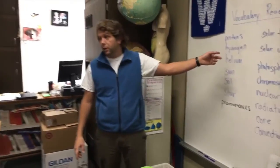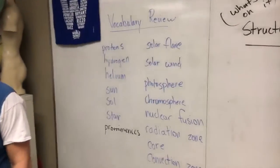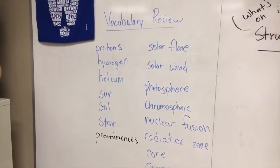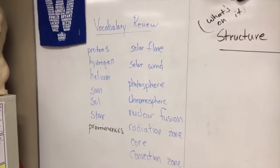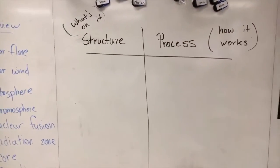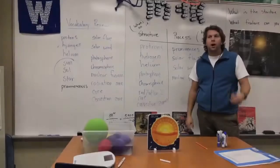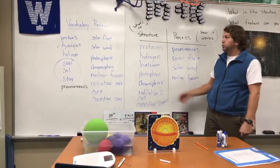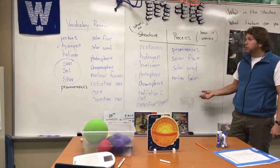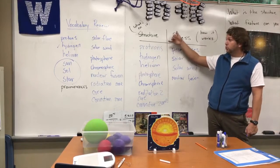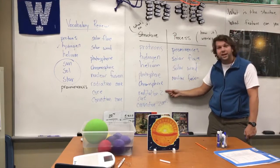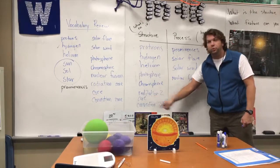I'm going to review the vocabulary for this week's lesson. This vocabulary is about the structure of the sun, but some of these words are more of a process that the sun does. So let's separate them out. We've divided up our vocabulary words into whether it's a structure of the sun or a process. The structures were the protons, the hydrogen, the helium, the photosphere, the chromosphere, the radiation zone and the convection zone, and also the core.